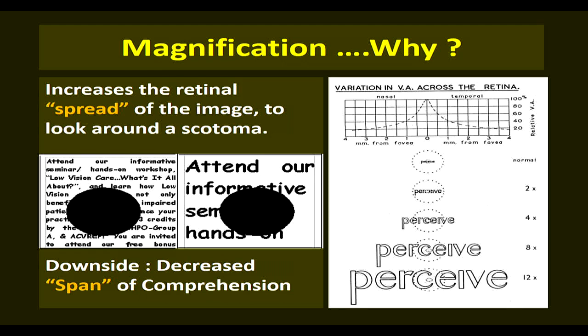As one moves away from the center of the fovea, visual acuity drops. One millimeter away from the fovea, visual acuity is dropped by 60%, and at 4 millimeters away, it is dropped by 80%. The extra-foveal retina cannot interpret details with the same clarity as the fovea. But even this poor peripheral vision can be used to see if the image falls on it — that is exactly what magnification does: it increases the retinal image's size so that the peripheral area of the retina can perceive it. The extra-foveal retina receives an enlarged, slightly blurred but functionally useful image.